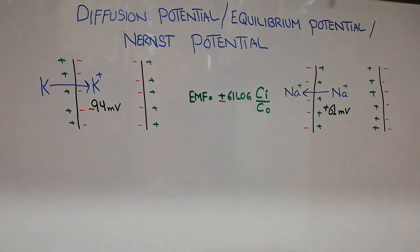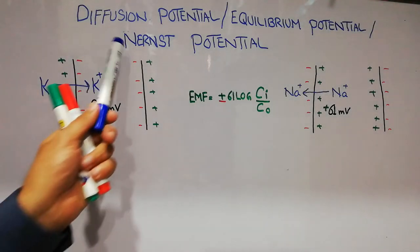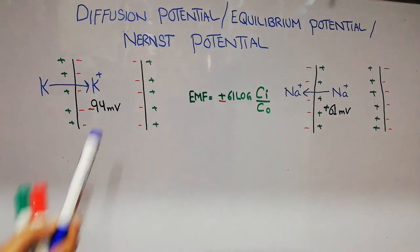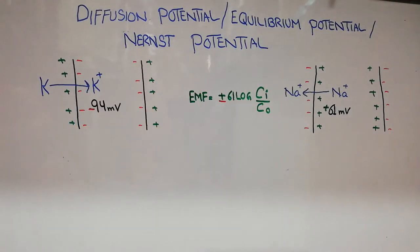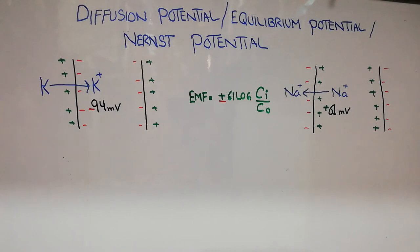In this lecture we are going to discuss diffusion potential, equilibrium potential, and Nernst potential. In the last few lectures we have discussed transport across the cell membrane. There are two types of transport: passive transport, which does not require any energy, and active transport, which needs energy in the form of ATP. Passive transport could be simple diffusion or facilitated diffusion.